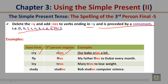Our baby cries a lot. 'Fly' becomes 'flies' — my father flies to Dubai every month. 'Try' becomes 'tries' — Mary tries to lose weight. 'Study' becomes 'studies' — Bob studies computer science. The D is a consonant, so you delete the Y and add IES.